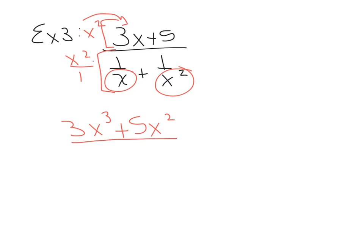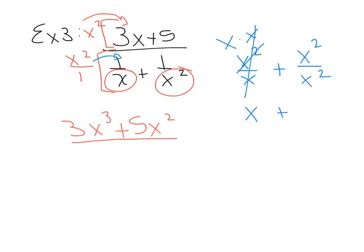For the denominator, top times top over bottom times bottom gives X squared over X plus X squared over X squared. X squared over X: since X squared is X times X, one X reduces, leaving X. X squared over X squared: both reduce but not to zero — they reduce to 1, since whenever the numerator and denominator are the same the fraction equals 1. So the denominator turns out to be X plus 1.